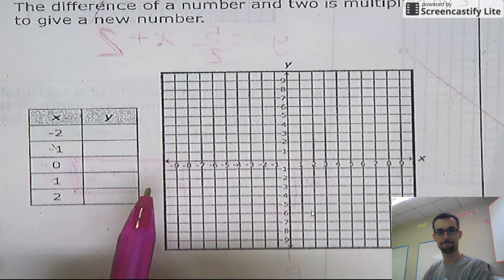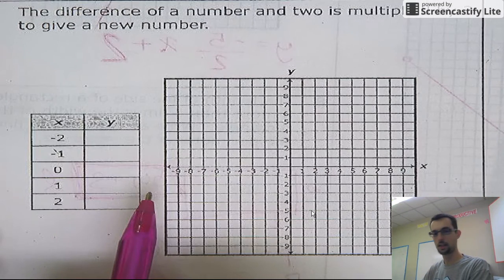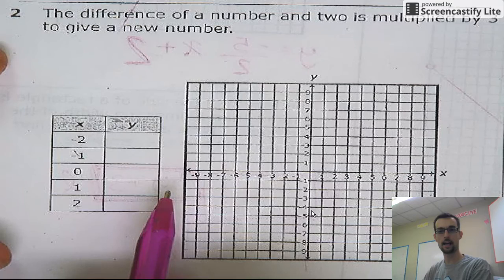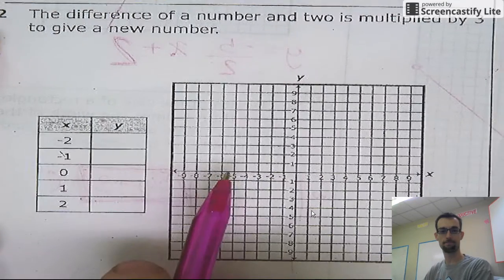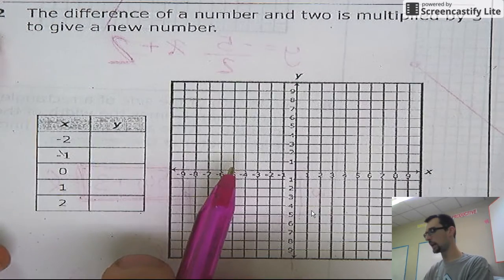Alright, last question. The difference of a number and two is multiplied by three to give a new number. Alright, let's talk about this.